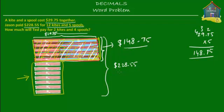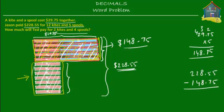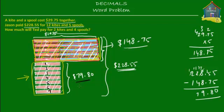Subtracting $148.75 from $228.55 gives the value of the remaining block — the seven kites. Computing $228.55 minus $148.75: 5−5=0; borrow, 15−7=8; borrow, 17−8=9; borrow, 11−4=7. So the bottom block, made up of 7 kites, costs $79.80. That means 7 kites cost $79.80.